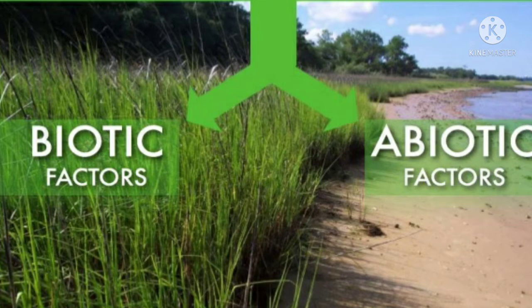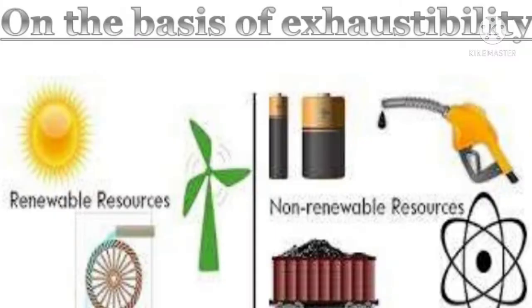On the basis of exhaustibility, resources are also divided into two categories: renewable and non-renewable. Resources which can be renewed, recycled, or regenerated are called renewable resources — like solar, wind, water cycle energy, and forest life; these all come under renewable resources.